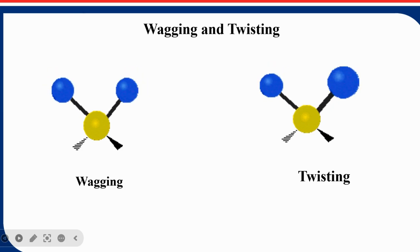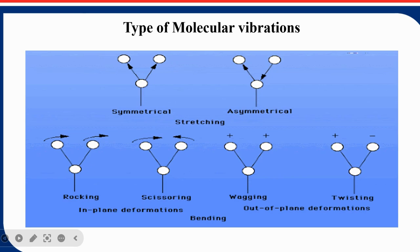These are representations that can be drawn on paper, since 3D images cannot be represented directly. When drawing figures on paper for rocking, scissoring, wagging, twisting, and for symmetric and asymmetric vibrations, they can be denoted using standard notation.